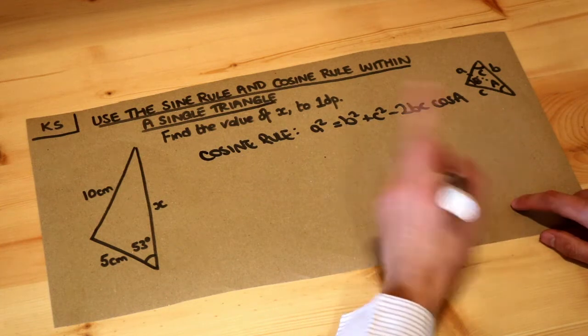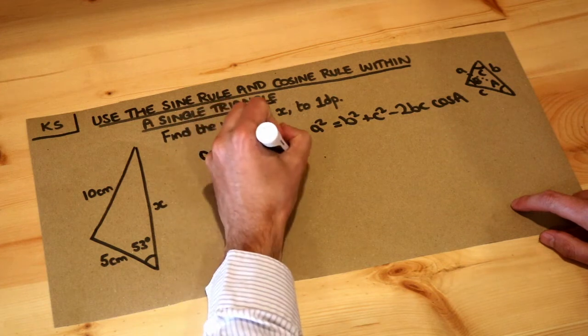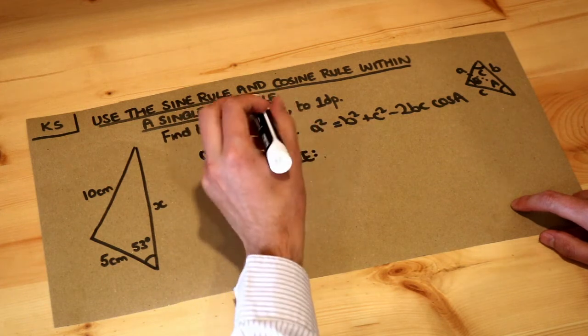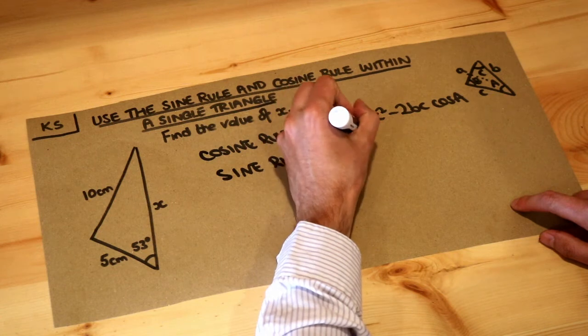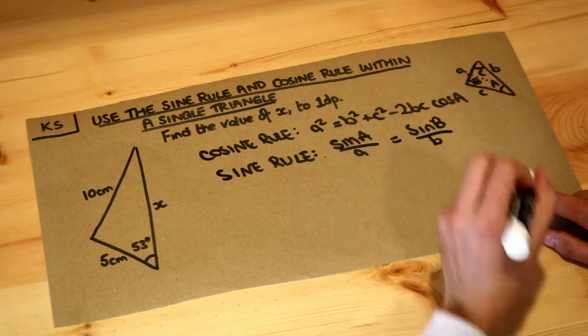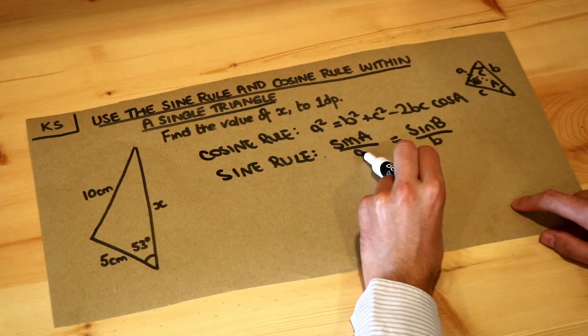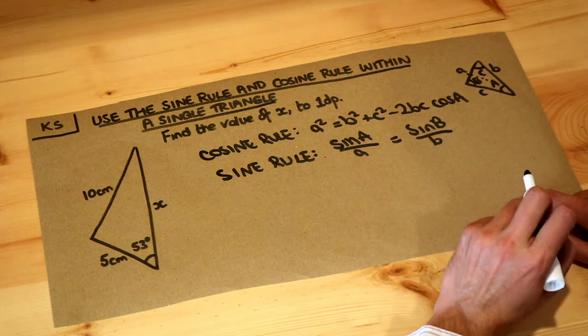What I would actually do is use the sine rule first. Remember the flipped sine rule for finding unknown angles: sin A over little a equals sin B over little b. That's basically saying that if you do sine of a particular angle and divide it by the length of the opposite side, that's always going to be the same.